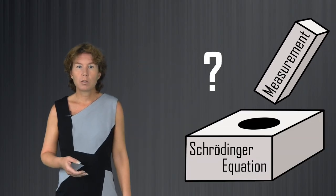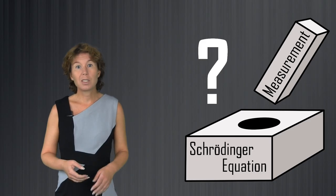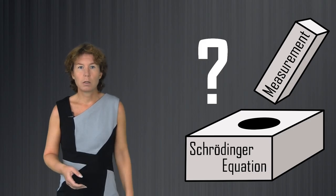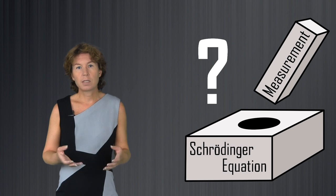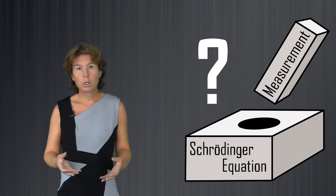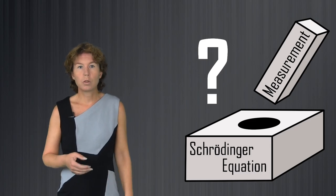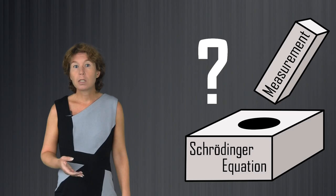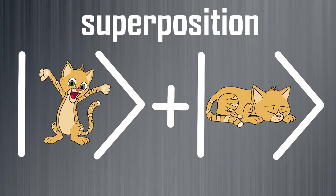We do not ever observe a particle that is 50% measured. The problem with quantum measurement is now that the update of the wave function is incompatible with the Schrödinger equation. The Schrödinger equation is linear, which means if you have two different states of a system, both of which are allowed according to the Schrödinger equation, then the sum of the two states is also an allowed solution. The best known example of this is Schrödinger's cat, which is a state that is a sum of both dead and alive. Such a sum is what physicists call a superposition.